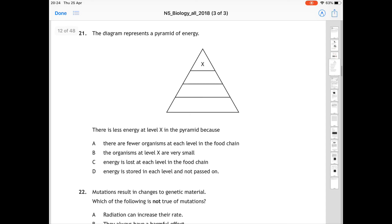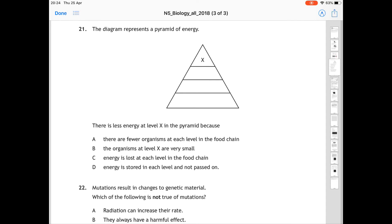Question 21 is referring to pyramids of energy, and it shows you at the top of the pyramid is level X. It's asking you there is less energy at level X in the pyramid because why? Now there are some examples here that there are fewer organisms, or the organisms at level X are very small, that are just wrong, whereas the correct answer is C. Energy is lost at each level in the food chain. So a pyramid of energy, energy is lost at each level, which means there is less energy at the top. So 21 is C.